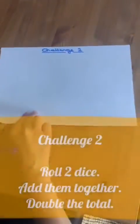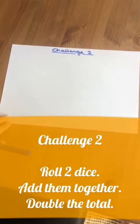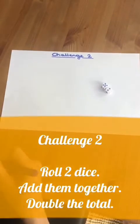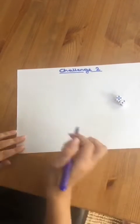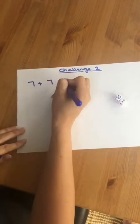For challenge two, you need two dice. Five add two is seven. Seven plus seven equals...